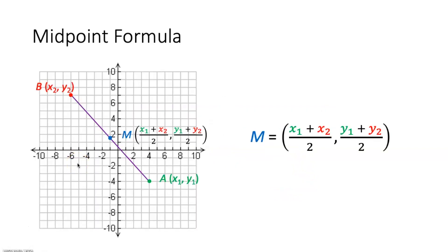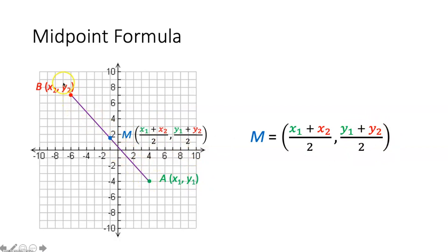Now let's talk about the midpoint formula. If we have two points and they're no longer on a number line but on the coordinate plane, what we're going to do is average the x values and average the y values — adding the two x values together and dividing by 2, then adding the two y values together and dividing by 2. That will give us the point right smack dab in between those two points: the midpoint of that given segment.